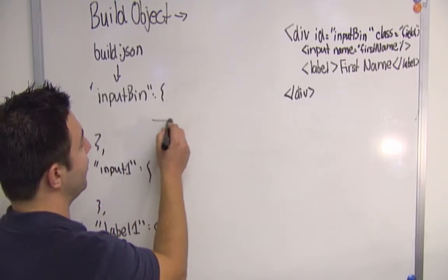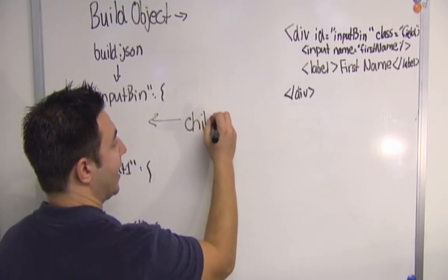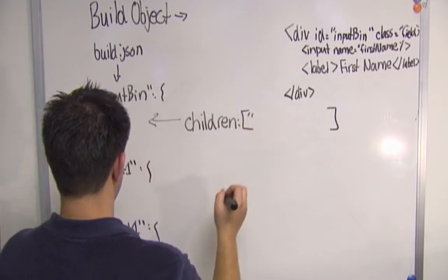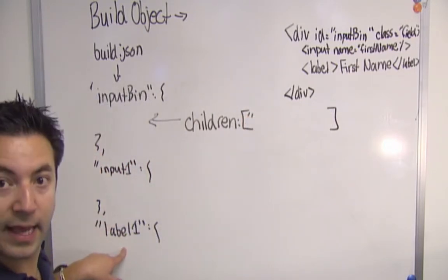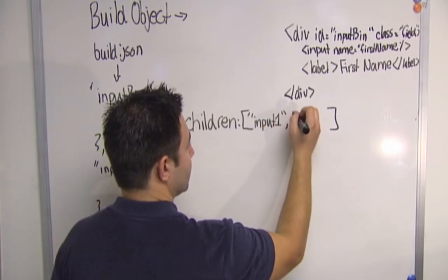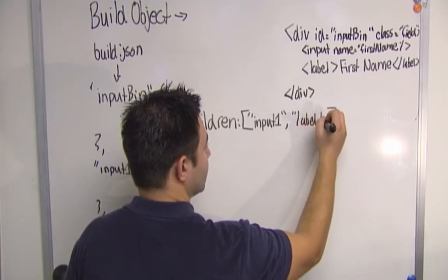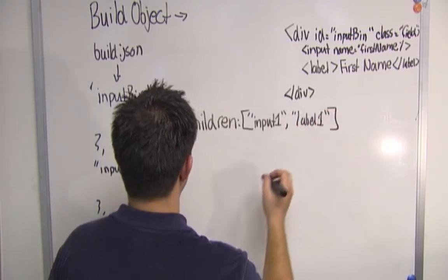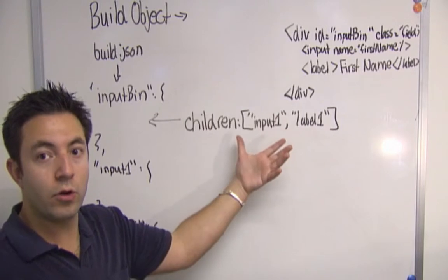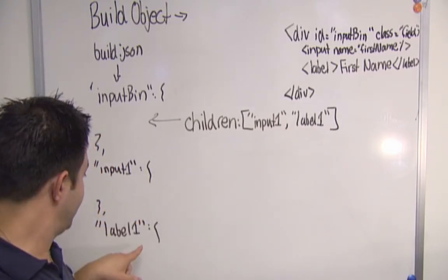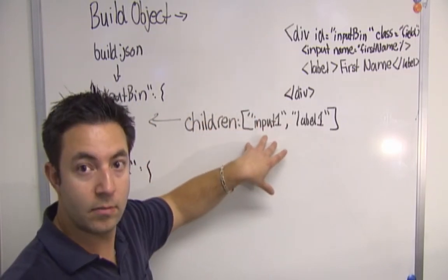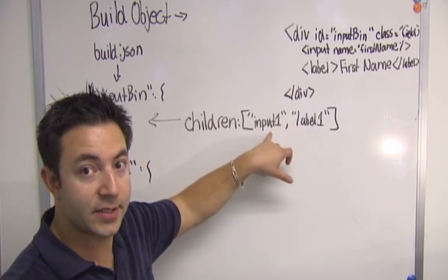So inside of input bin, there would have been a children property and an array. And in this array, it would have had input1 and label1. This is one of the properties of input bin. This will automatically, when it's building, go and automatically build input1 and label1 inside of input bin. So to accomplish this structure, we use this property and this array.